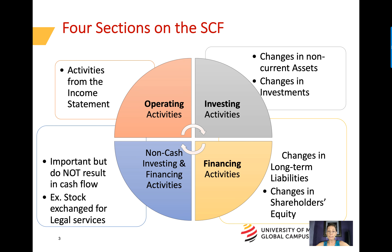There are three main sections of the statement of cash flows and a fourth section for non-cash flow activities that are important enough to be on the face of the statement, even though these transactions do not result in cash flow. The three main sections are cash flows from operating activities, which arise from activities on the income statement; cash flows from investing activities, which arise from increases and decreases in non-current assets and investments; and financing activities, which arise from increases and decreases in long-term liabilities and stock or shareholders' equity.